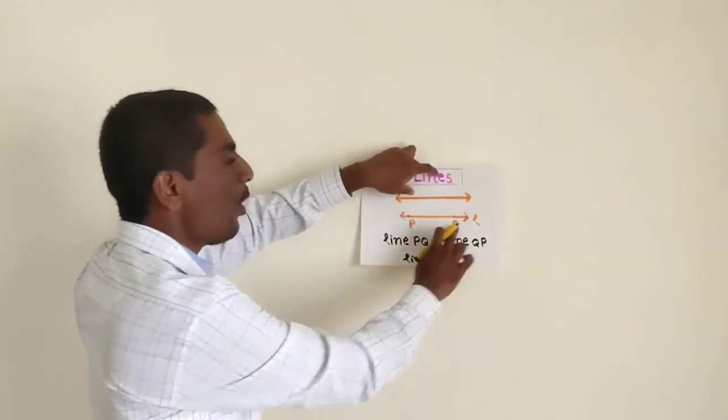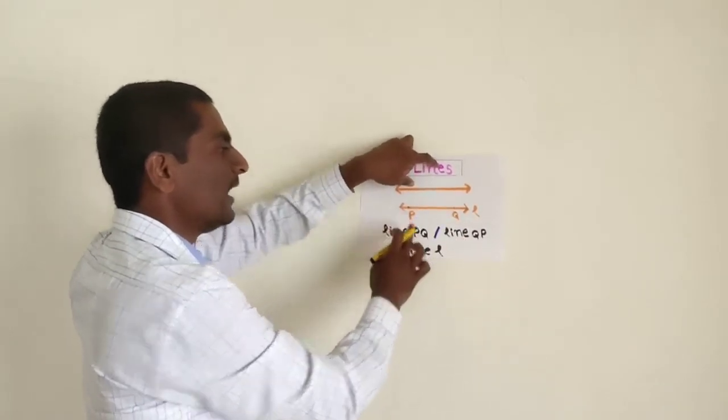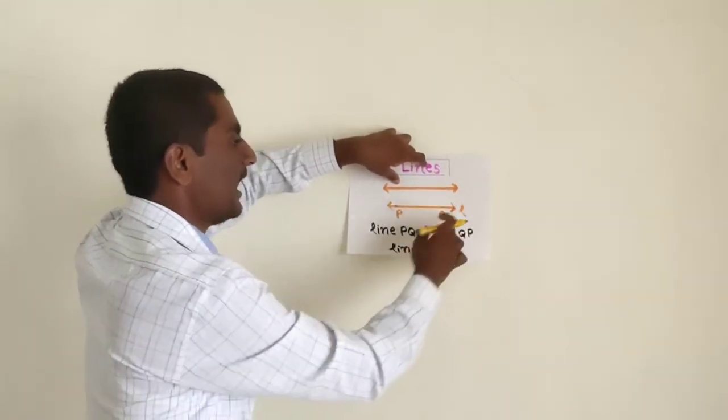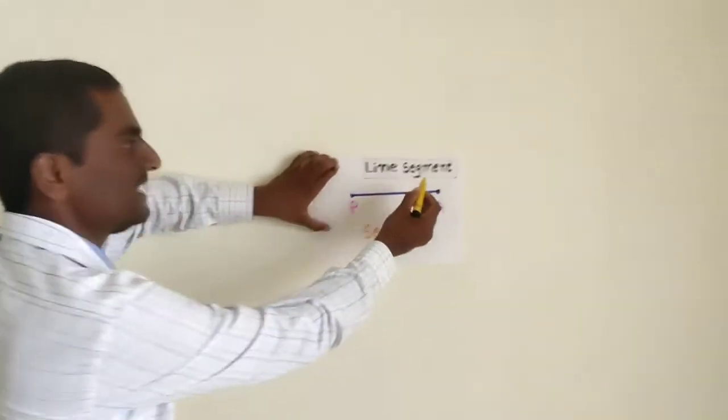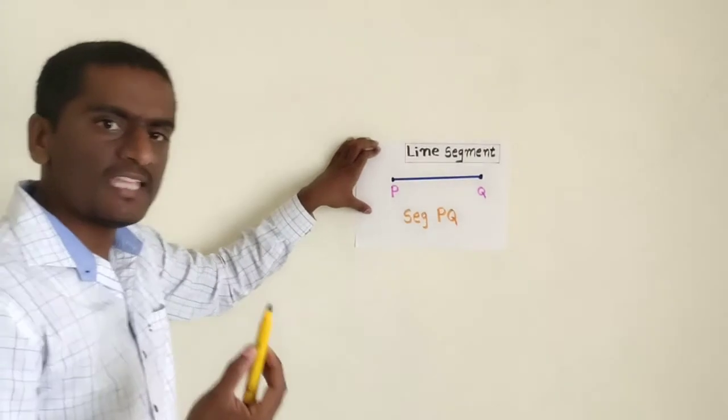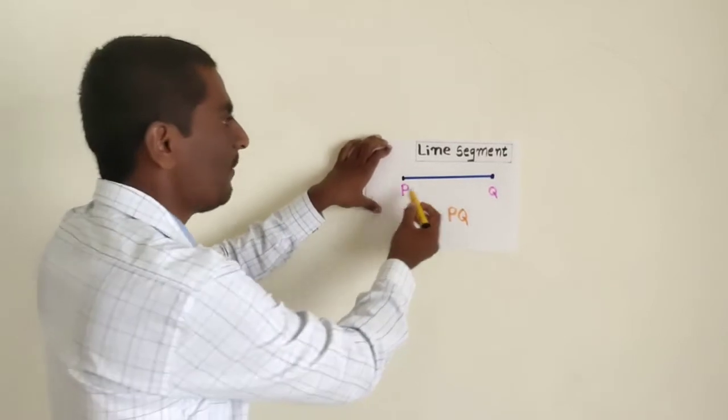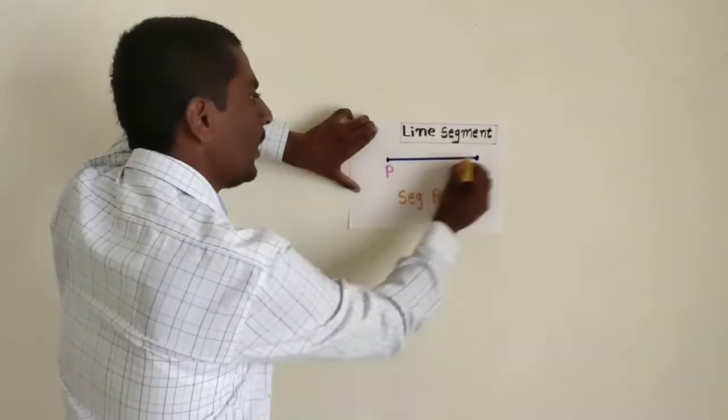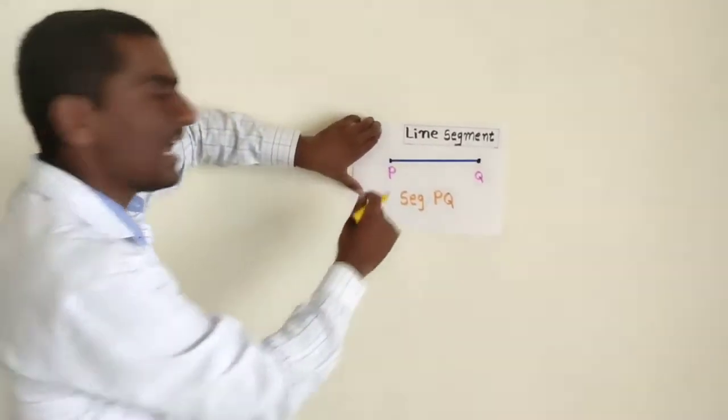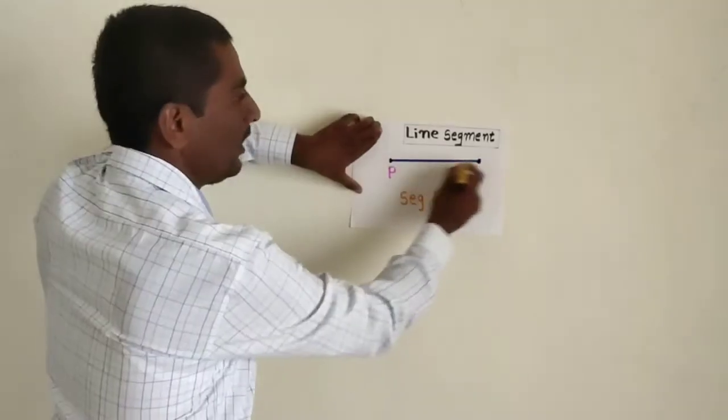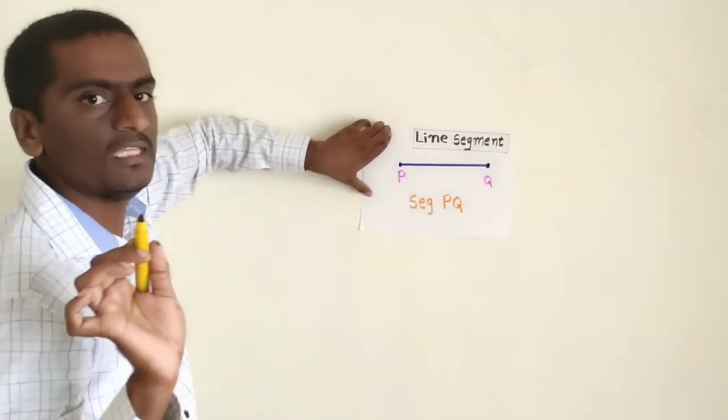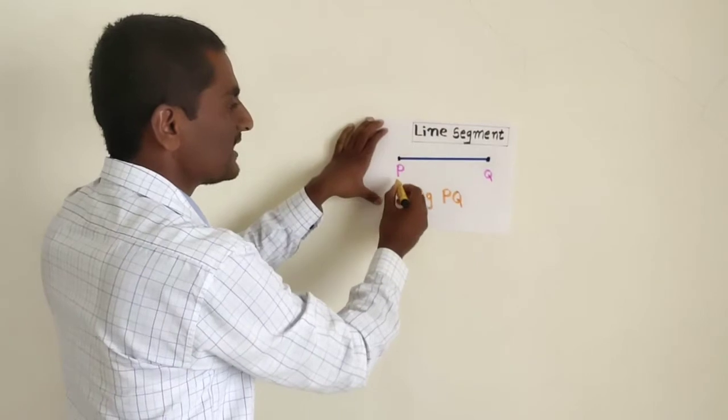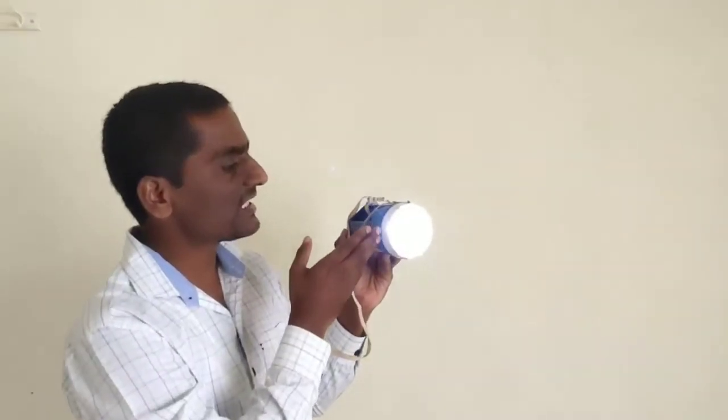That means line PQ, or it may be read as line QP, as well as with the help of small letters line is written, that means line L. Next basic concept in geometry is line segment. What is line segment? Line segment is a part or a piece of the line. It has two end points, means it has a limitation.